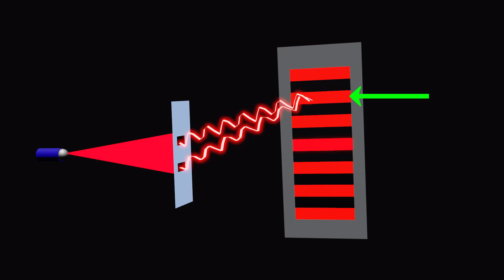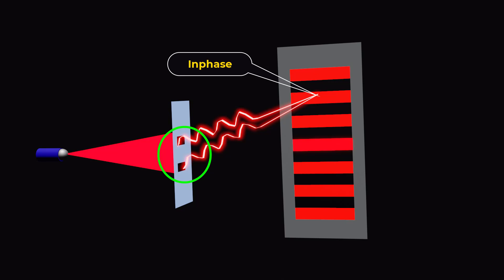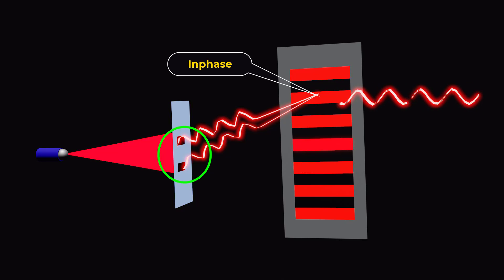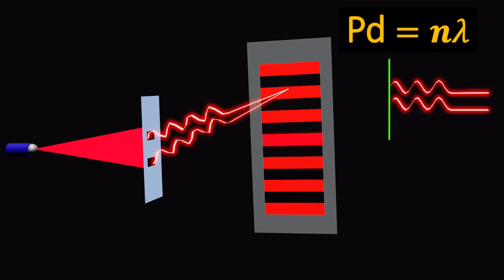The bright bands are regions of constructive interference, where the crests of the waves meet the crests of the other waves, which means that the waves from the two slits are in phase and add together to create a larger wave. This happens when the path difference between the waves is equal to an integral multiple of the wavelength.